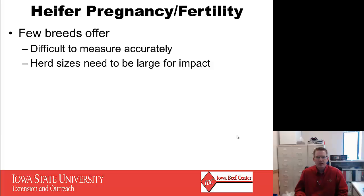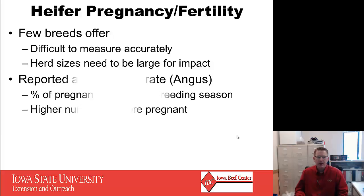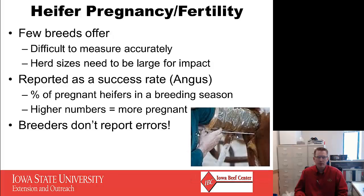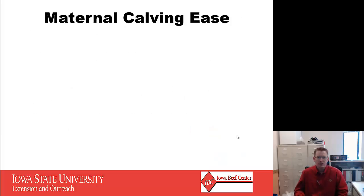Heifer pregnancy and fertility: very few breeds offer these traits because they're difficult to measure accurately. Herd size needs to be large for impact, and it is reported as a success rate — particularly in the Angus breed — as a percentage of pregnant heifers in a breeding season. Higher numbers equal more pregnant heifers. The problem is that breeders simply don't report errors; when a heifer does not conceive due to AI, those failures often do not get recorded at the breed association level.